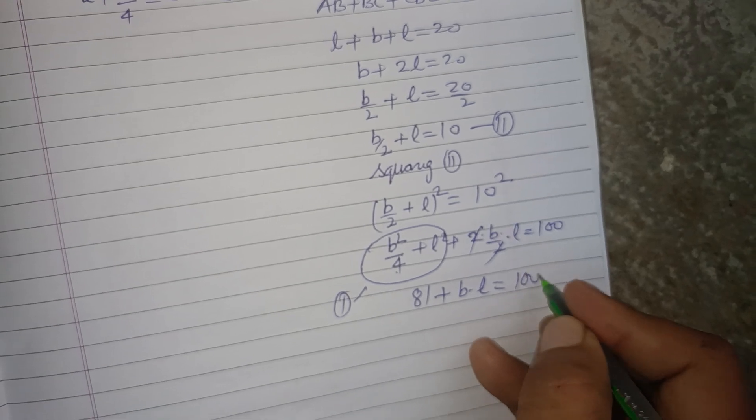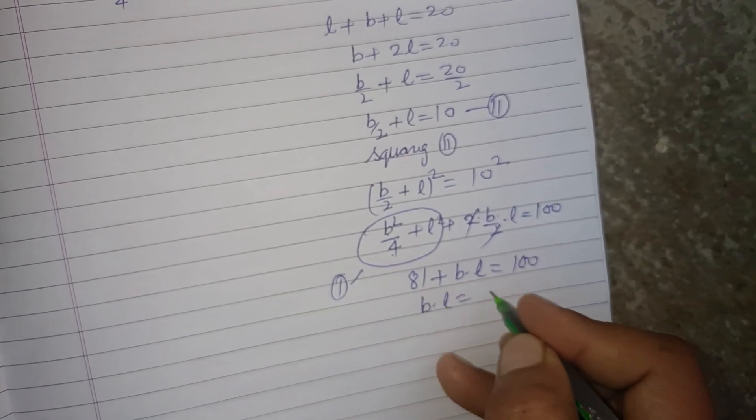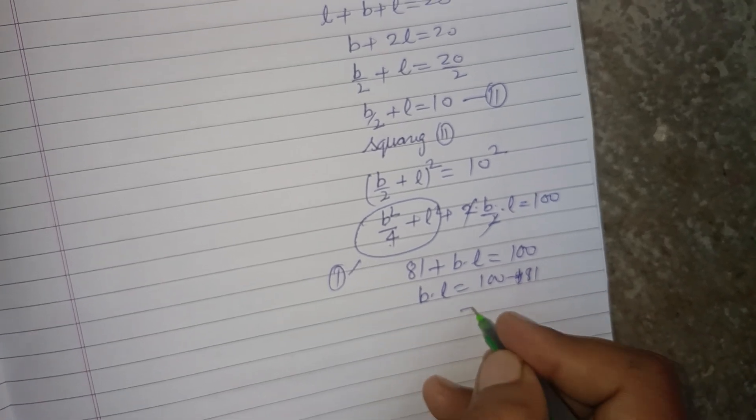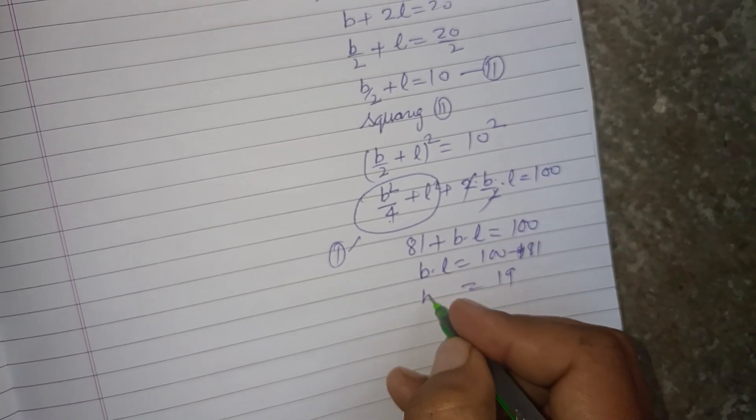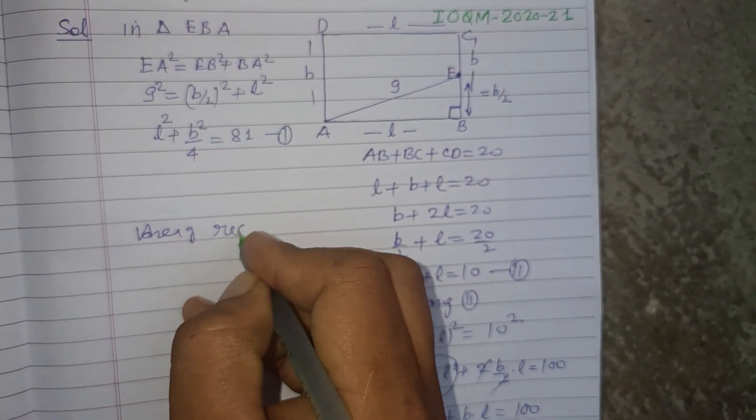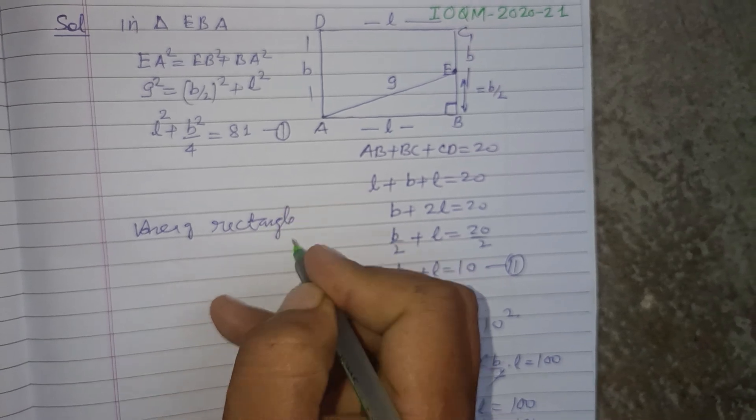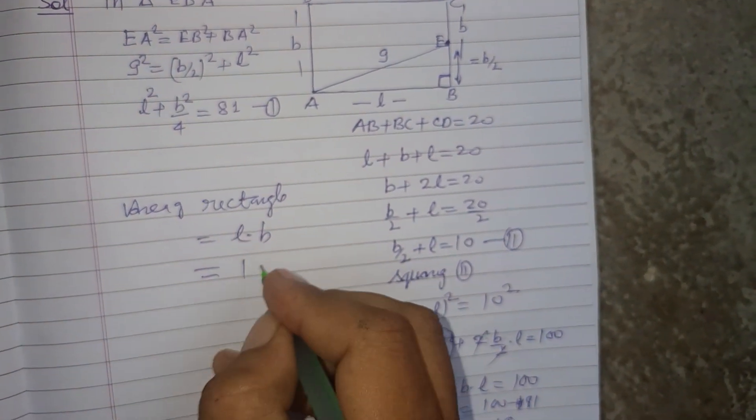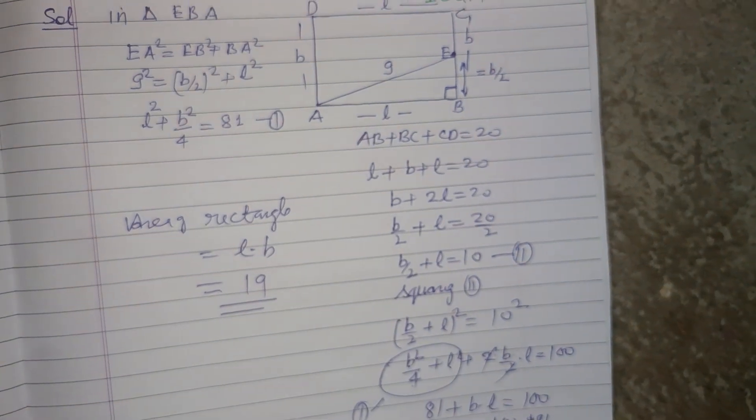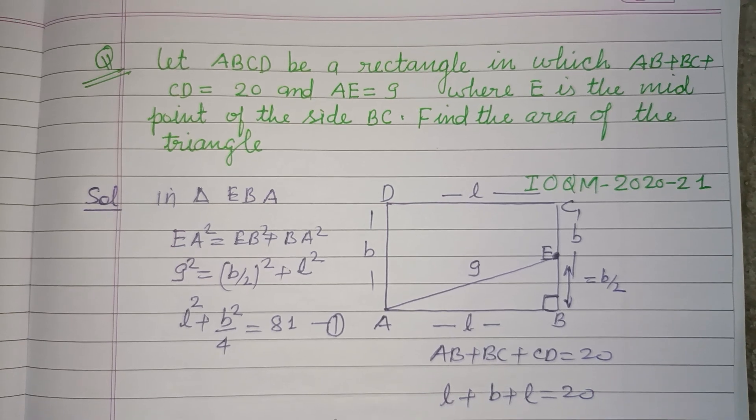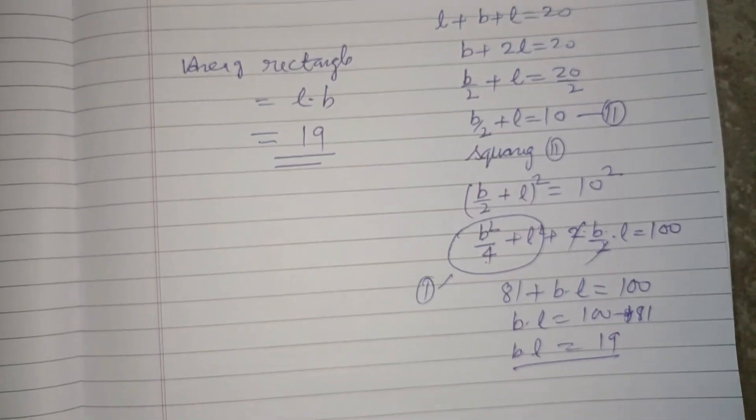Therefore bl = 100 - 81 = 19. So the area of the rectangle is l times b equals 19, which is the correct answer. I hope you got it. Please like the video, subscribe to the channel, thanks for watching.